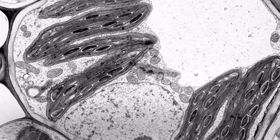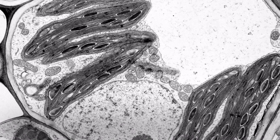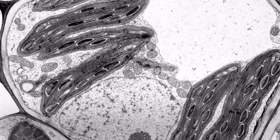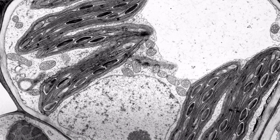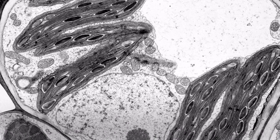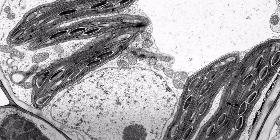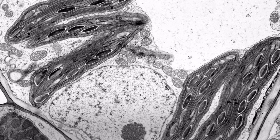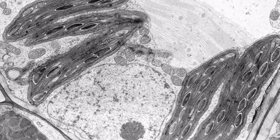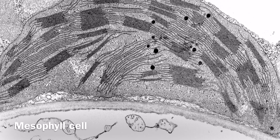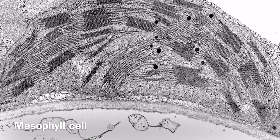In this electron micrograph, as well as seeing the nucleus and mitochondria, we see a significant number of chloroplasts. The chloroplast is the site of photosynthesis, and this suggests that this cell is a mesophyll cell from a plant's leaf.